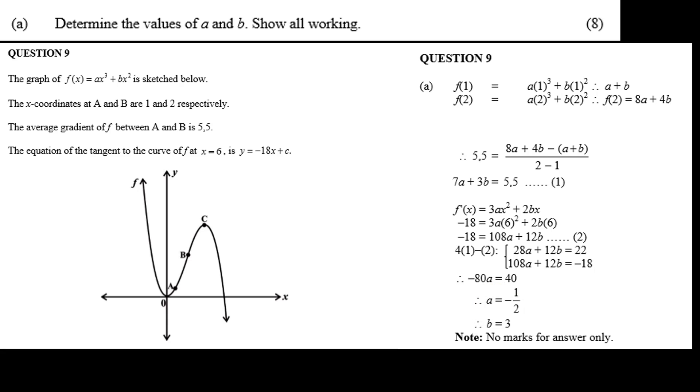Substitute a back into equation 1, and you get minus 3.5 plus 3b equals 5.5. 3b equals 9, or b equals 3.